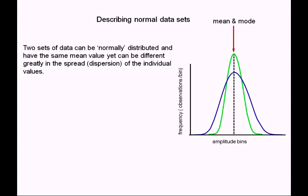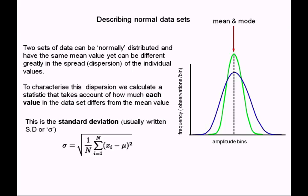We need a way of describing that dispersion, so we calculate a statistic that takes account of the extent to which each individual in the population is separated from the mean. The formula uses μ (the Greek letter mu) for the mean, and each value xᵢ represents an individual value, so the term xᵢ minus μ tells us how far each point is away from the mean.